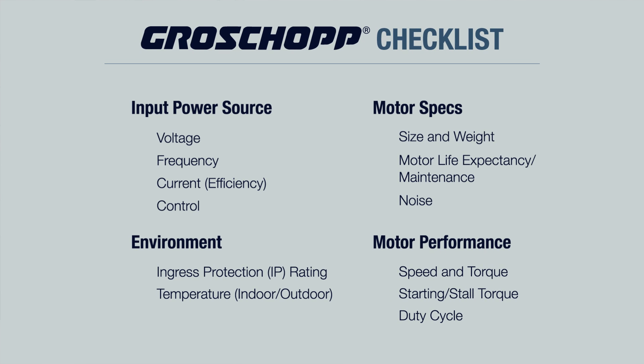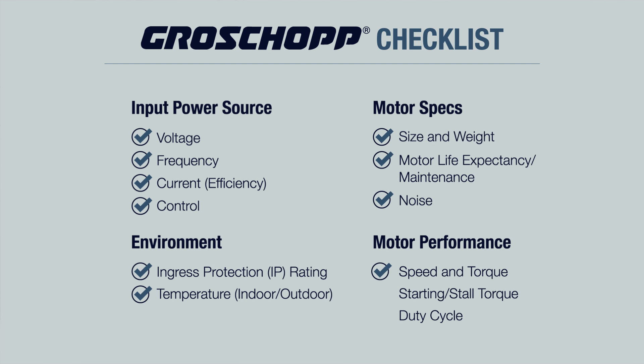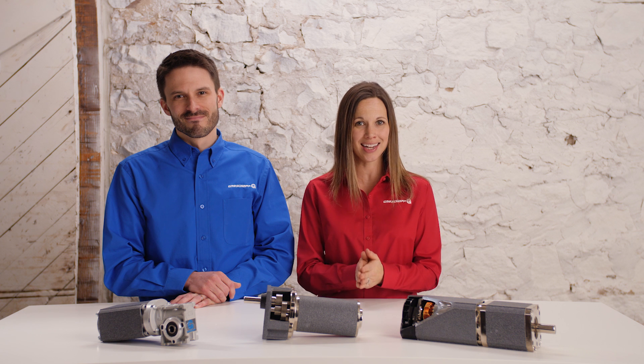We've created a tool to help you weigh out those design criteria. This is our application checklist and we've provided a download link below. Using this checklist to prioritize application criteria will help ensure the critical information required to achieve a best match for an application is not overlooked. Knowing your application and having accurate ratings for the motor and gearbox are the foundation to a successful gear motor.